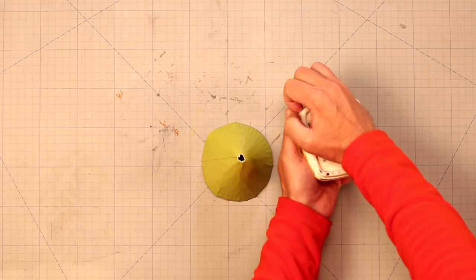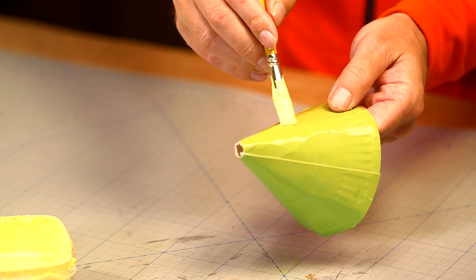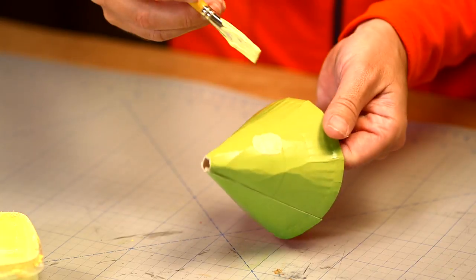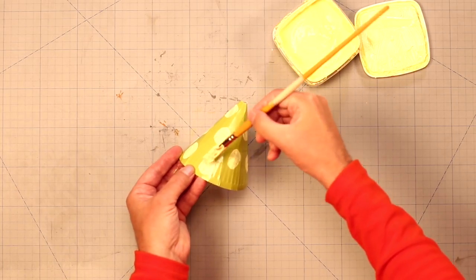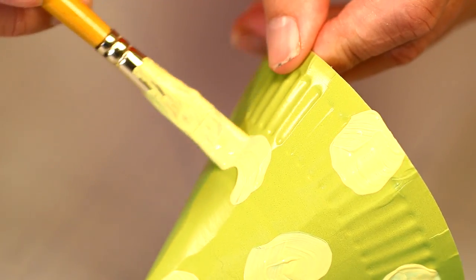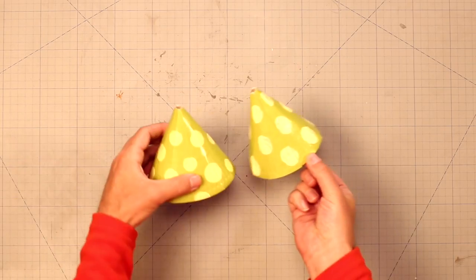Now we can decorate it any way we wish. How about some yellow spots? And here's one that is dry.